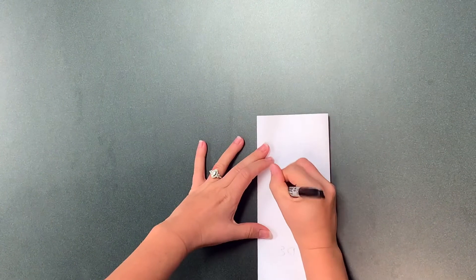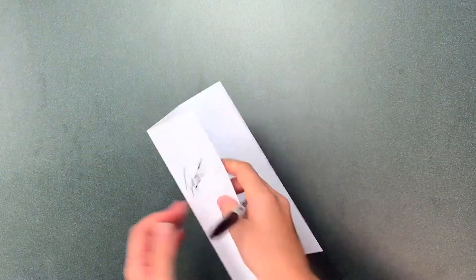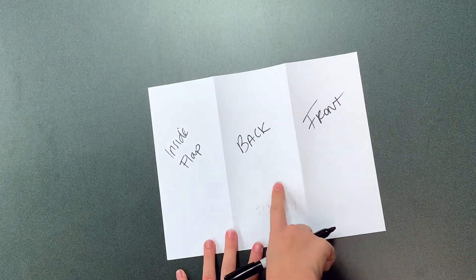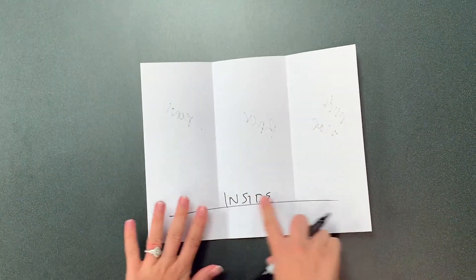And back. When you unfold your paper, you should have your inside flap on the left side, your back in the middle, and your front on the right side, and your inside is all the way across.